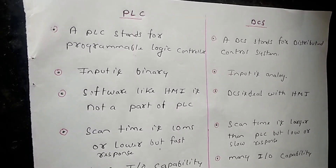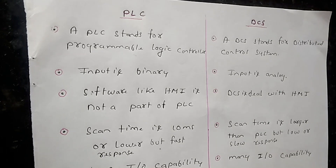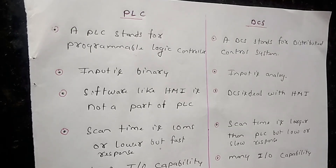Before starting the PLC and DCS differentiation, I'm going to give a brief introduction of what is PLC and what is DCS. PLC, a programmable logic controller, is basically a computer-based control system that continuously monitors the state of input devices and makes decisions based upon a program stored in it, and then controls the output device.